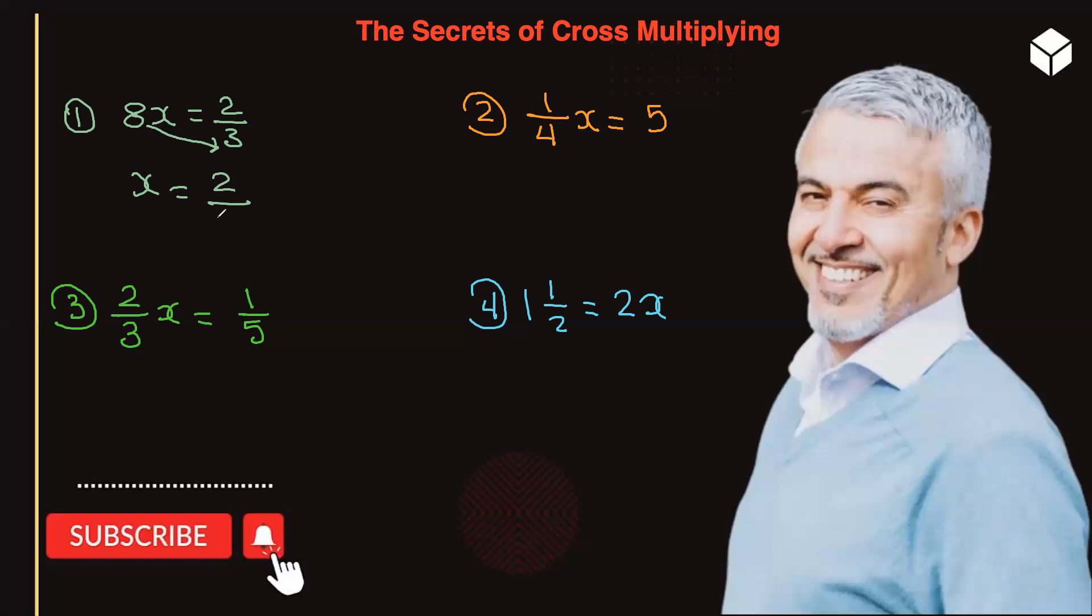8 times 3 is 24. Of course, you need to simplify this by reducing, and that gives you 1/12. That's how easy it is. Now, let's go to the next one.